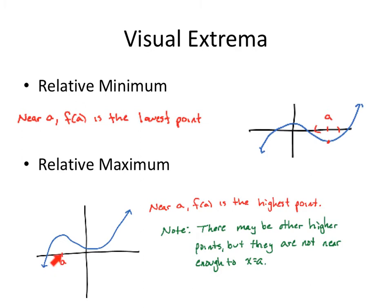The graph gets higher somewhere else. But near here, relatively close to a, this is a maximum. There may be other higher points, but they are not near enough to x equals a.